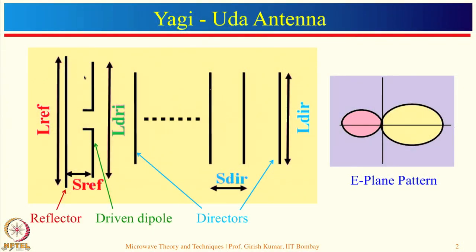A Yagi-Uda antenna consists of one driven dipole, one reflector behind the dipole, and then multiple directors on the other side. A dipole antenna has an omnidirectional radiation pattern, so it will radiate equally in all directions. However, there are many applications where we want radiation to be only in one particular direction.